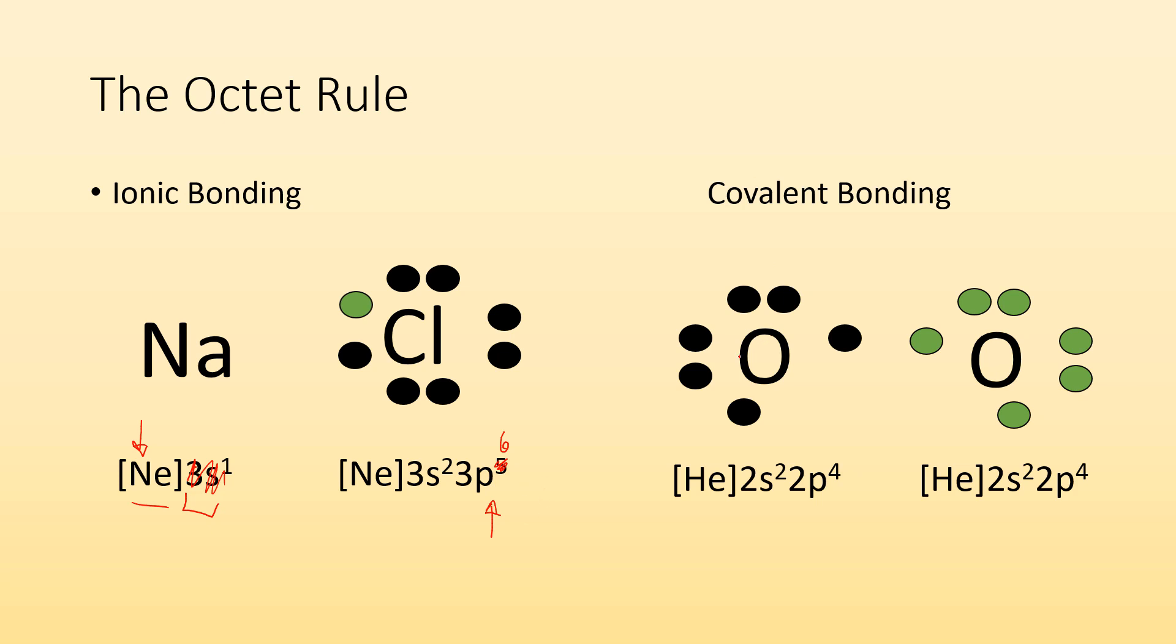With covalent bonding, it's a little different. We're not transferring electrons. What oxygen is doing in this example is going, hey, I only have six, you only have six. How about I share some of mine with you? You share some of yours with me and together it'll be like we each have eight.